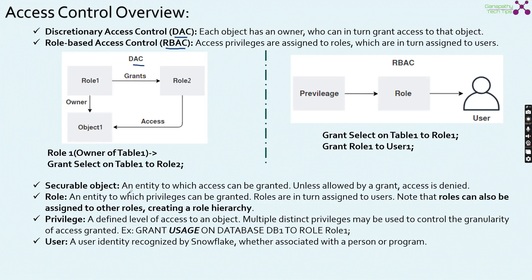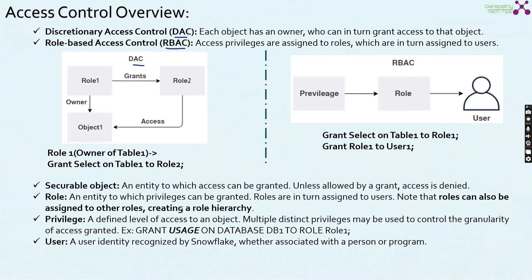There are some other important things to know from the Snowflake access control point of view. A securable object is an entity to which access can be granted. Unless allowed by a grant, access is denied. Some examples of securable objects are tables, views, stored procedures, and functions. A role is an entity to which privileges can be granted; roles are in turn assigned to users. Note that roles can also be assigned to other roles by creating a role hierarchy, which we will discuss in more detail. A privilege is a defined level of access to an object — for example, select is a privilege. Multiple distinct privileges may be used to control the granularity of access granted.